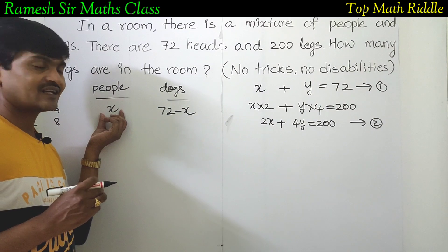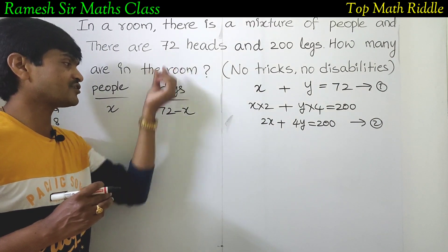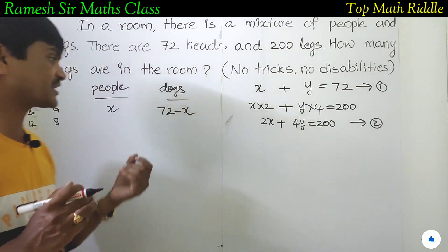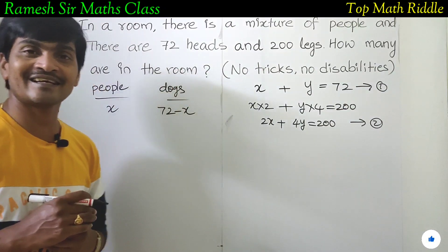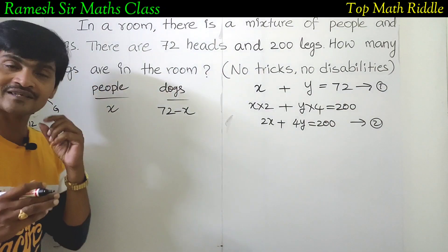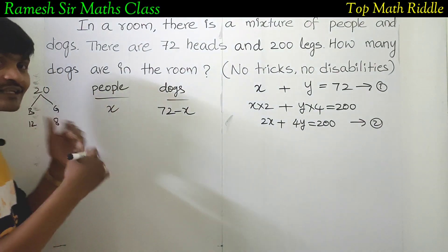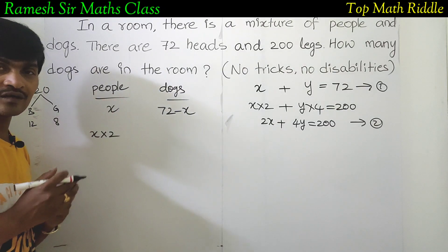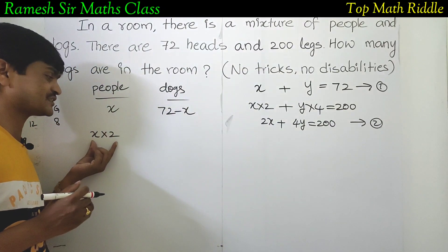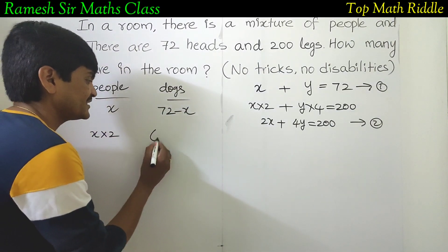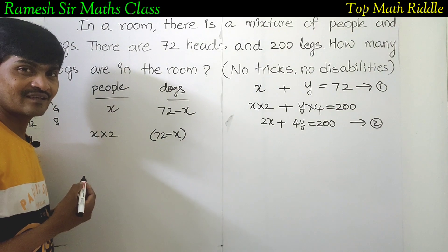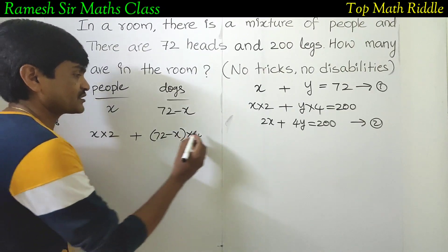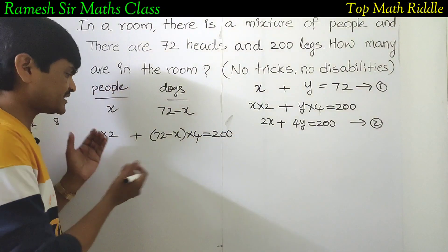Now we accent the number of pupils as x. Each person and each dog has only one head. The total legs are 200. Each person has 2 legs, so pupils contribute x times 2 legs. The dog count is 72 minus x, and each dog has 4 legs. So: 2x plus 4 times (72 minus x) equals 200.